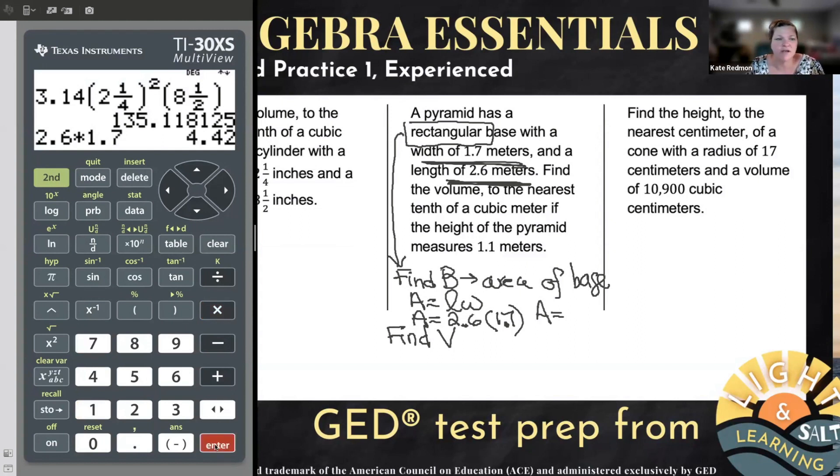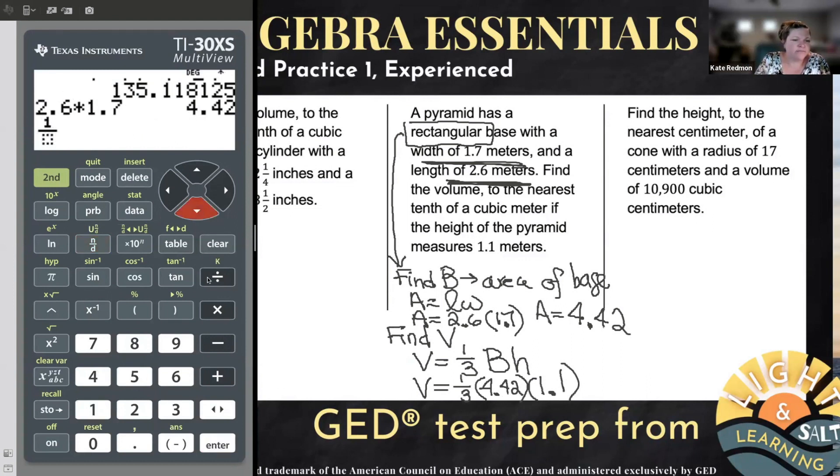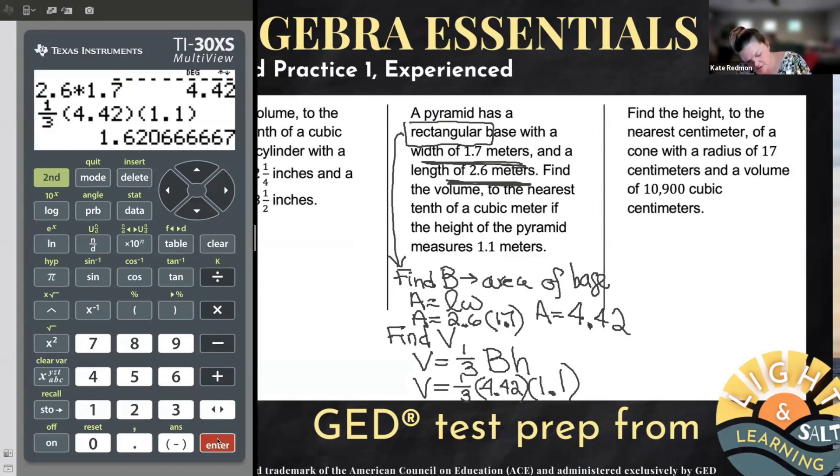Meaning it's 4.42 square meters. And now I can use that volume is equal to one third of the base times its height. So V is equal to one third times the area of the base shape, which we said was 4.42 times the height of the pyramid now. And the pyramid's height is 1.1 meters. So let's type in my one third, and let's multiply that by 4.42, and then again by 1.1.